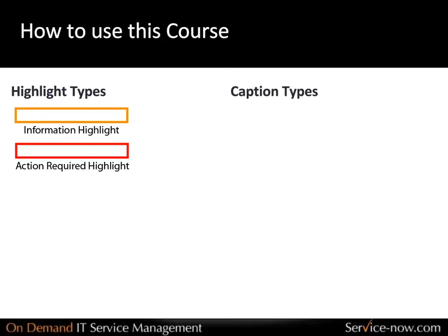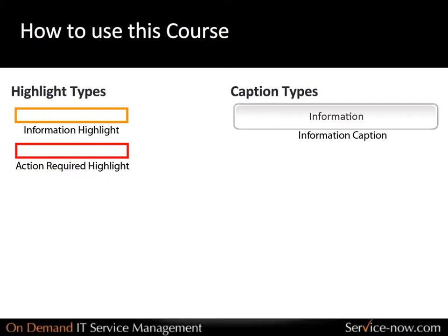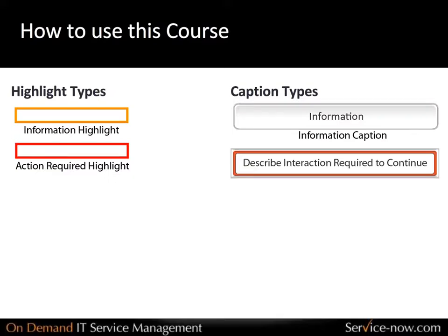Just as there are two types of highlights, there are two types of related captions. An ivory caption simply provides information about what you see on the screen. A red caption will explain what action is required by you to move forward in the module.